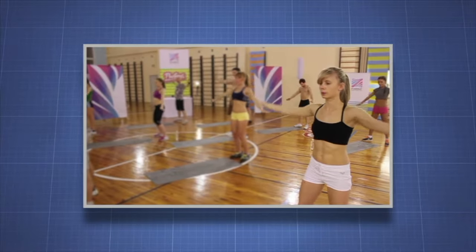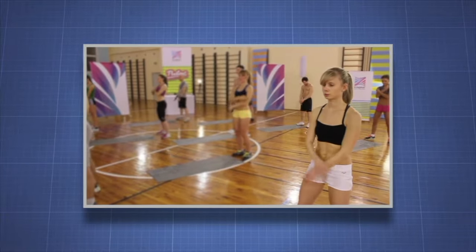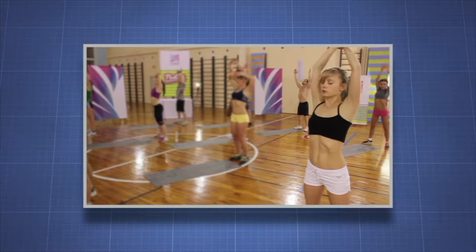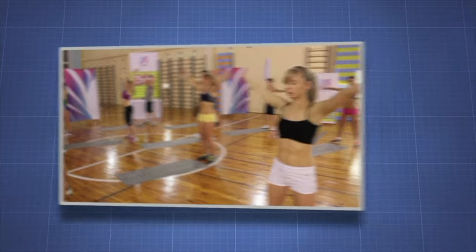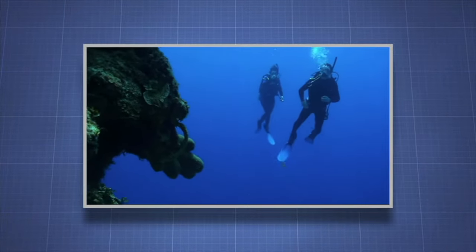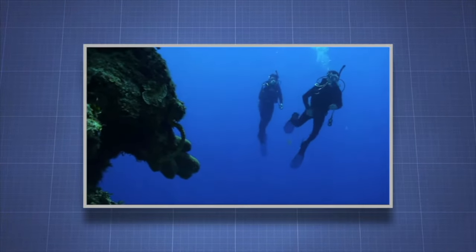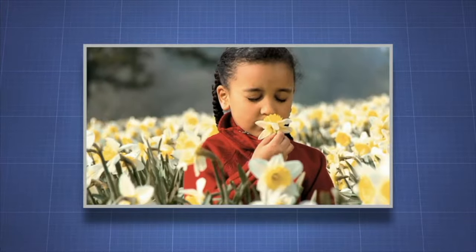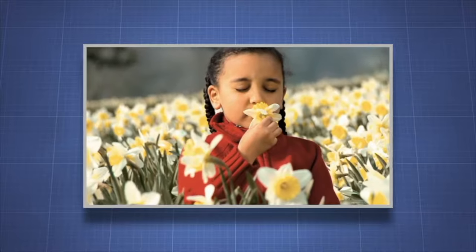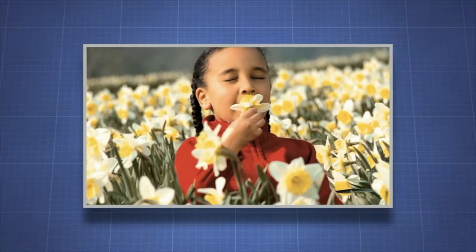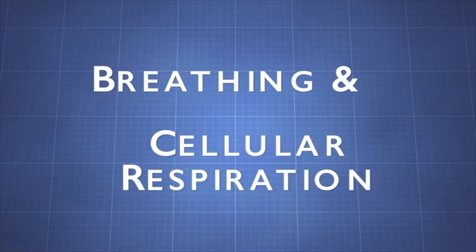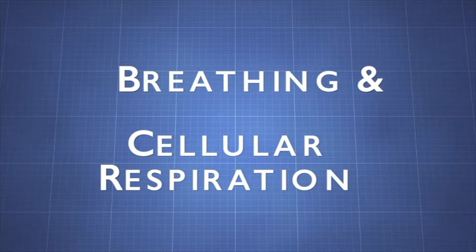Breathing is controlled by the autonomic nervous system, but humans have the ability to override automatic respiration. Ultimately, the control of breathing is about supply and demand of oxygen. Oxygen is necessary for life and is used to create energy in cellular respiration. Let's learn more about breathing and cellular respiration.